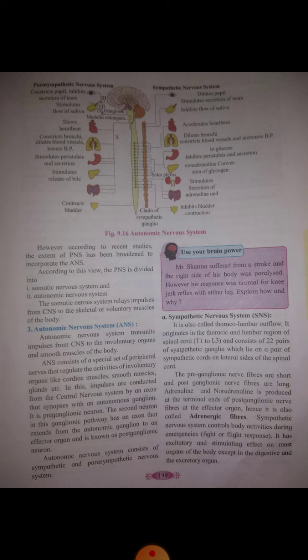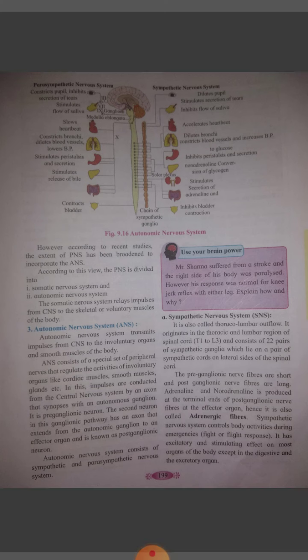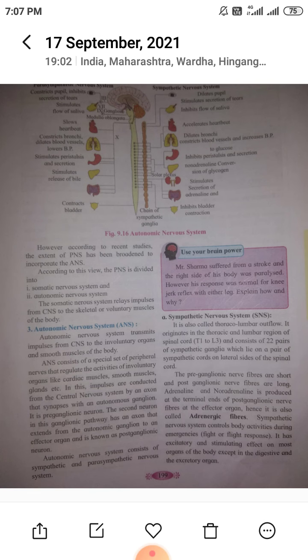It originates in the thoracic and lumbar region of the spinal cord, and consists of 22 pairs of sympathetic ganglia which lie on a pair of sympathetic cords on the lateral side of the spinal cord.